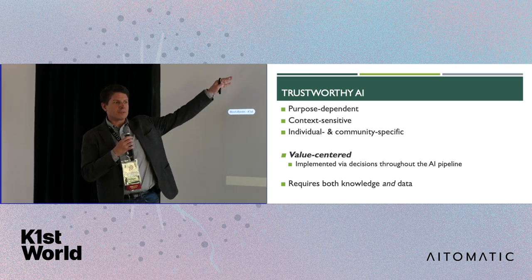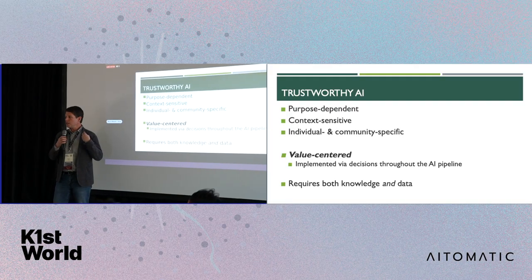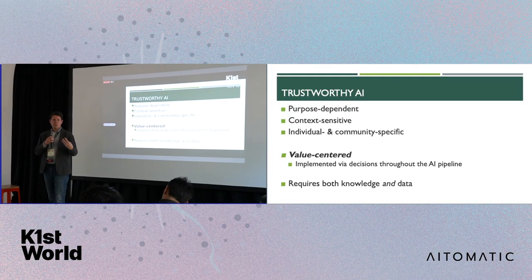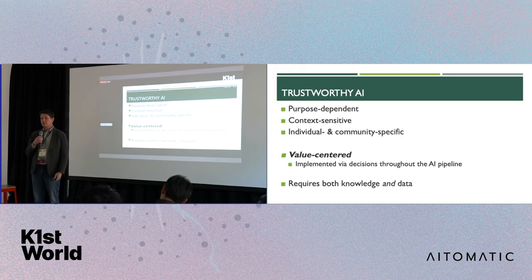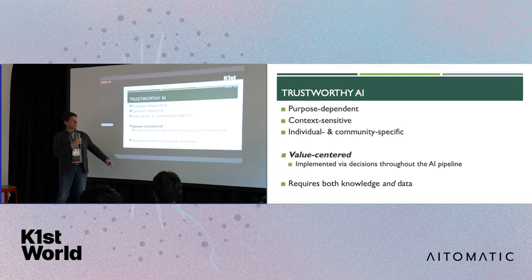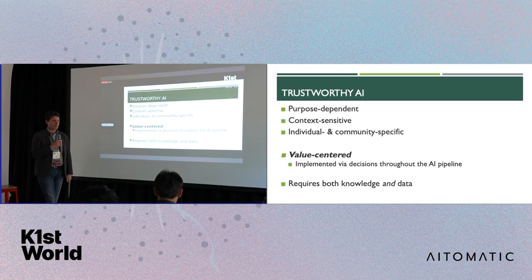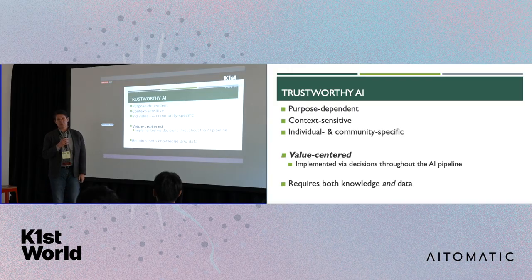Trustworthiness is individual-specific — your own experiences can matter for whether you trust a system or not. And it's context-sensitive, depending on how you want to use it and what context you're in. This all sounds terrifying if you're an AI developer, because part of what we try to do — what I emphasize to data science students — is that data science just works everywhere. But what I think is the right way to think about it is that if we care about our systems being adopted and used by people in the right ways, we have to think seriously about the kinds of values we're trying to realize.